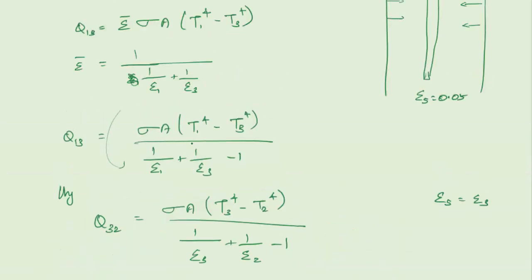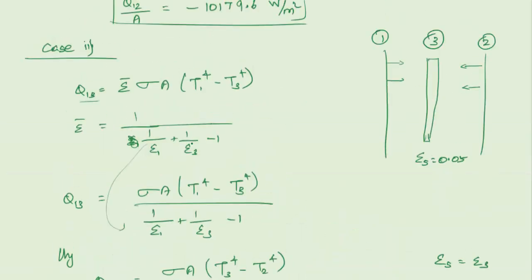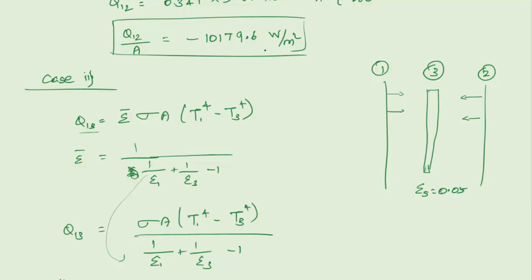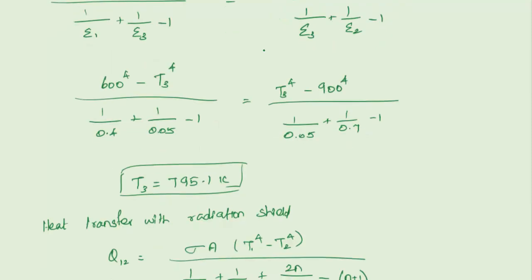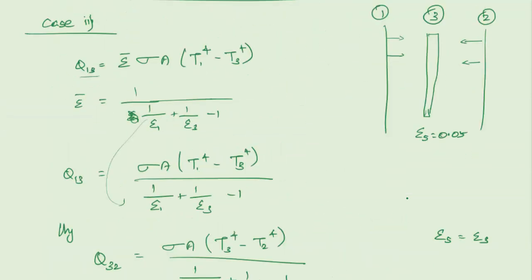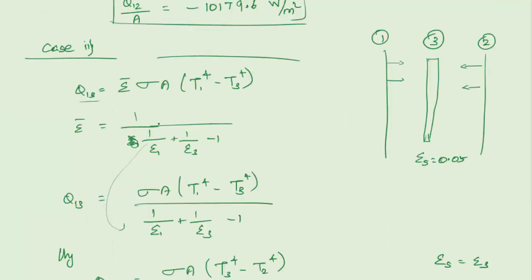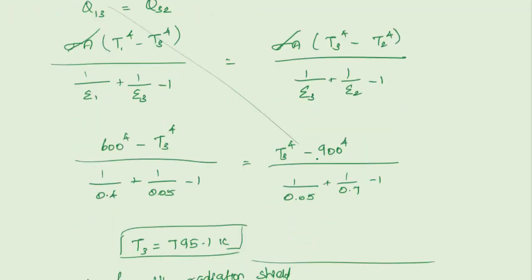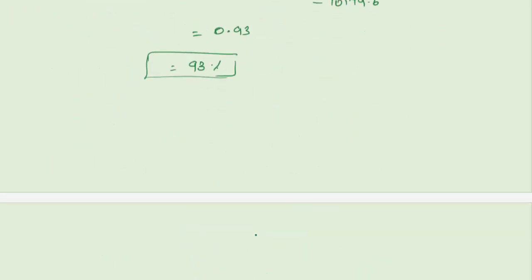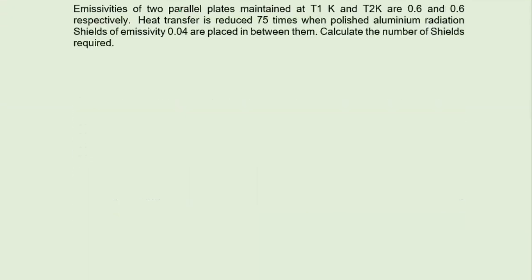To summarize Problem 1: Case 1 finds heat transfer without radiation shield. In Case 2, we first find the shield temperature T3 using the equilibrium condition, then calculate heat transfer with the shield. Note: if the shield temperature is not asked, you can skip the T3 calculation step and go directly to the heat transfer with shield formula.